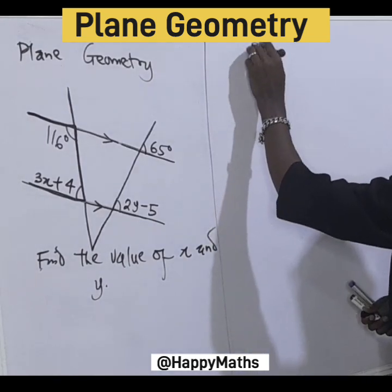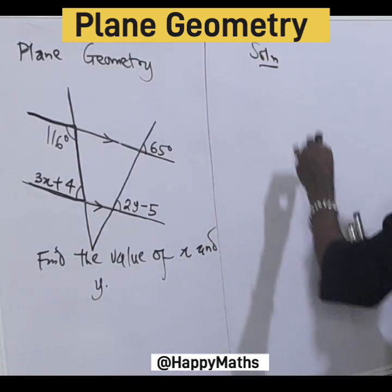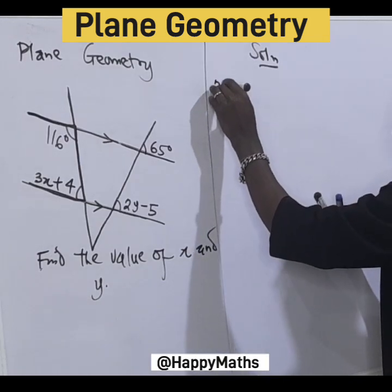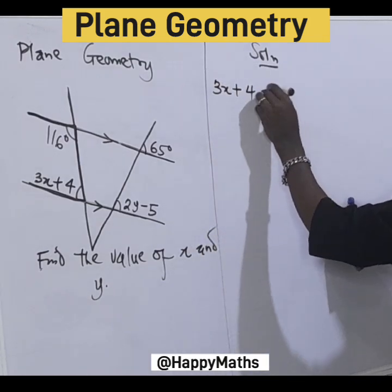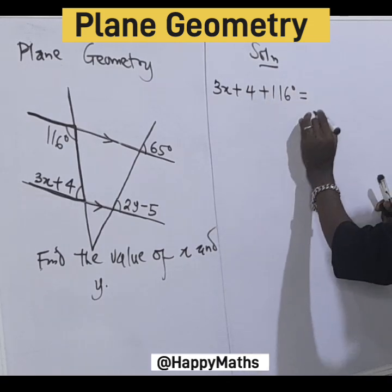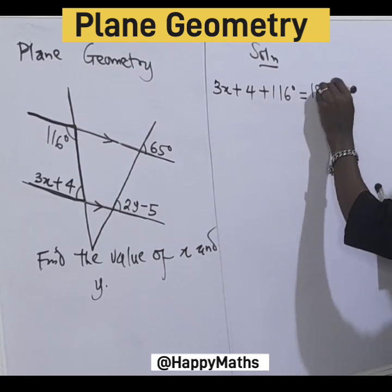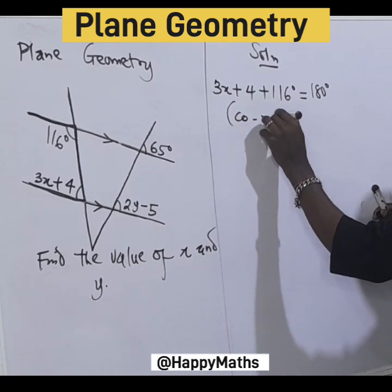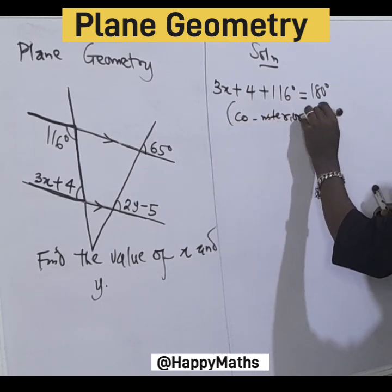So let's solve. Solution: We have 3x + 4 + 116° = 180° using co-interior angles.